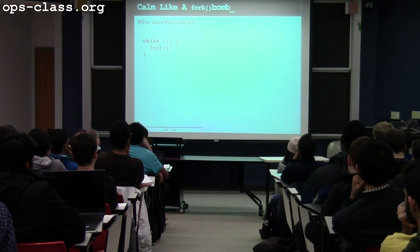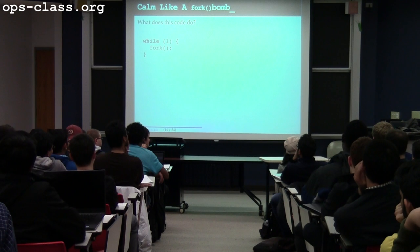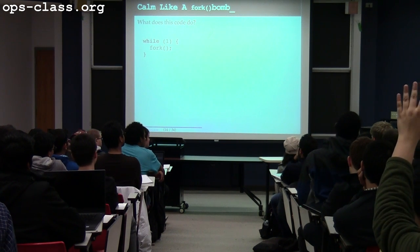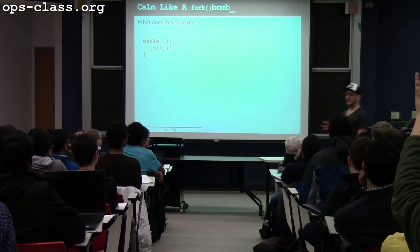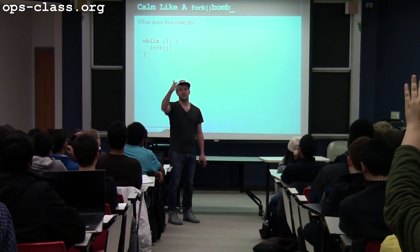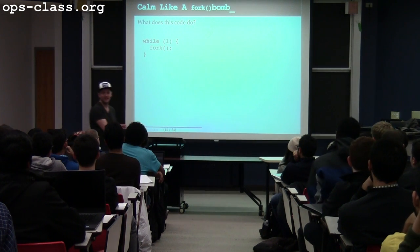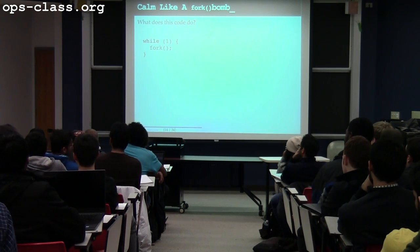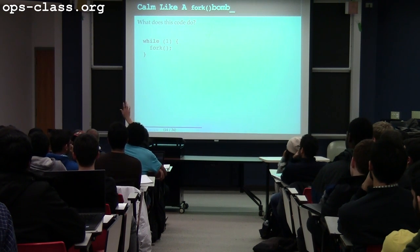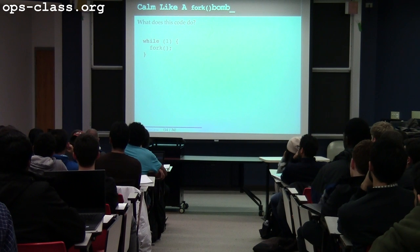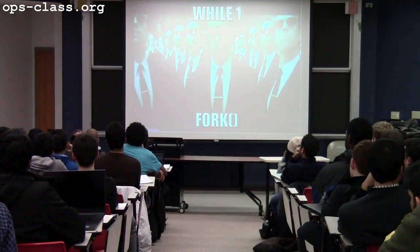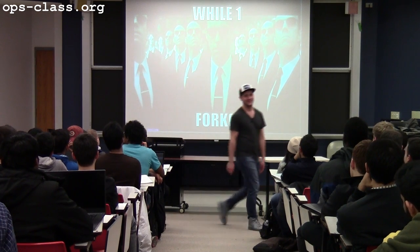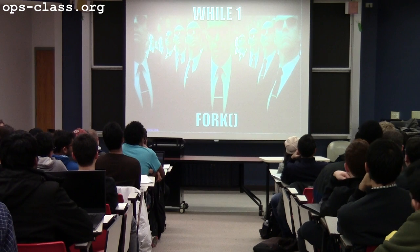Fork bomb. You guys can write this code in your VM and try it. What does this code do? It creates a geometrically increasing number of processes — first two, then four, then eight. This might make system admins angry. Most shared systems have reasonable guidelines about this, but write this code in your own VM to experiment.